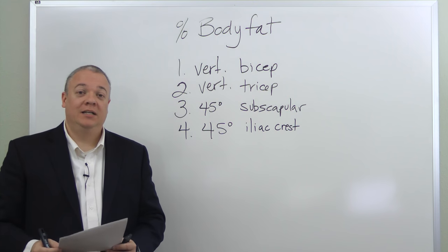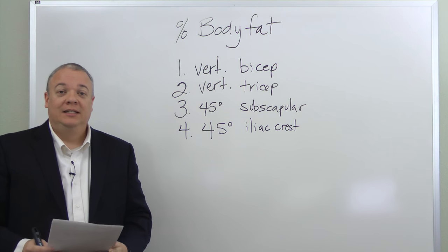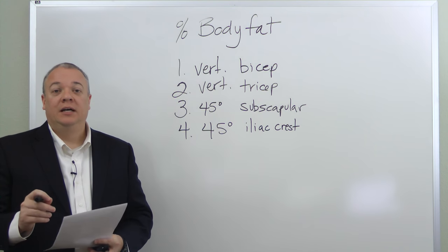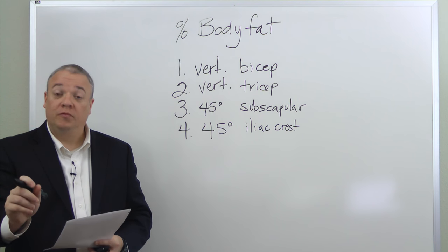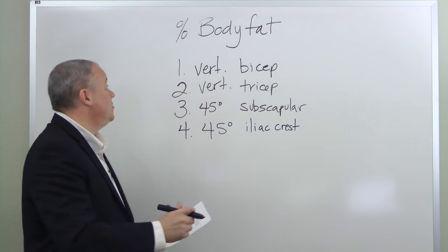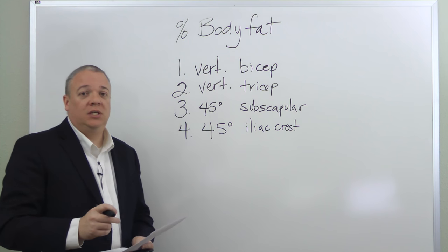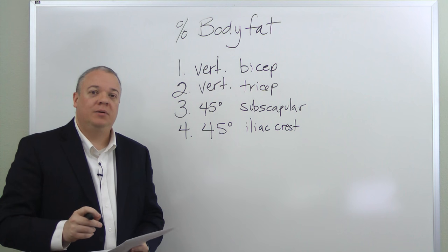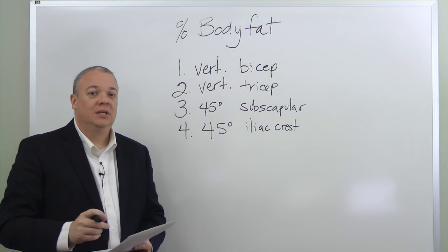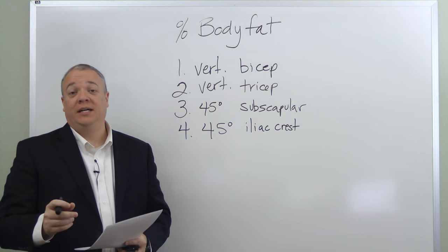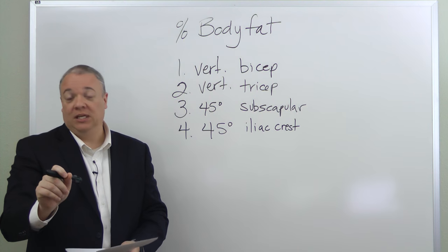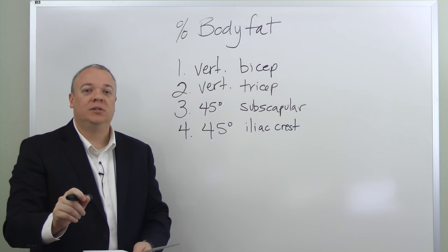Today we're going to talk about how to find percentage body fat. This is done using calipers in millimeters, measuring skin folds — pinches of skin — at four different areas. The first is a vertical pinch of skin on top of the bicep, about halfway between the elbow and the shoulder. The second is on the tricep, in the back of the arm — a vertical pinch or fold of skin, once again halfway between the shoulder and the elbow.